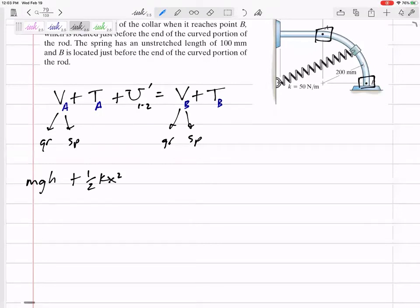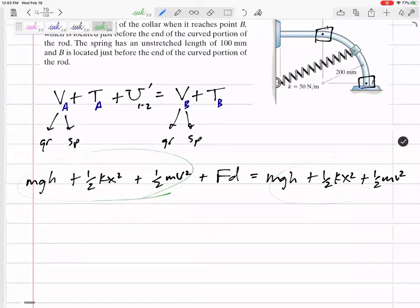The potential energy in gravity plus potential energy in a spring, plus the kinetic energy, 1⁄2 MV squared, plus any – I'm going to put FD, but technically this is sometimes integral FDS might be zero. It's only FD if it's a constant force and it's in the same direction. So over here, this would be MGH plus 1⁄2 KX squared plus 1⁄2 MV squared. All of this on the left is the initial. All of this on the right is final.